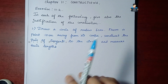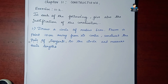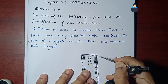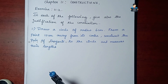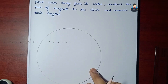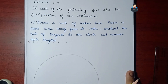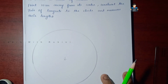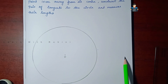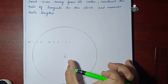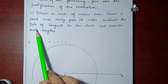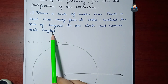Draw a circle of radius 6 cm. So first, we draw a circle of radius 6 cm. This is the center point. Next, from a point 10 cm away from its center, we mark a point at 10 cm and we mark it P. Next, construct the pair of tangents to the circle and measure their lengths.